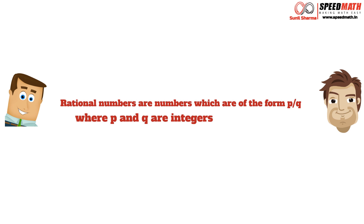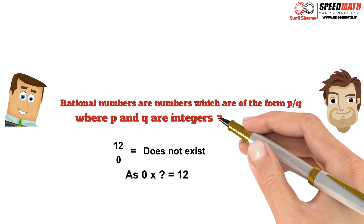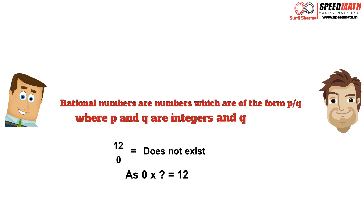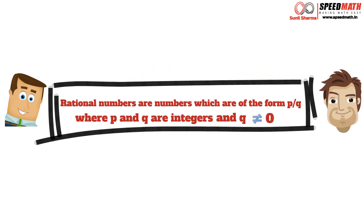Mr. Logic asks: since 0 is also an integer, can the denominator be 0? Mr. Math says: great question. Take the fraction 12/0 — it does not exist because 0 cannot divide 12. So the denominator cannot be 0. Therefore our complete definition is: rational numbers are numbers which can be expressed as p/q where p and q are integers and q cannot be 0.